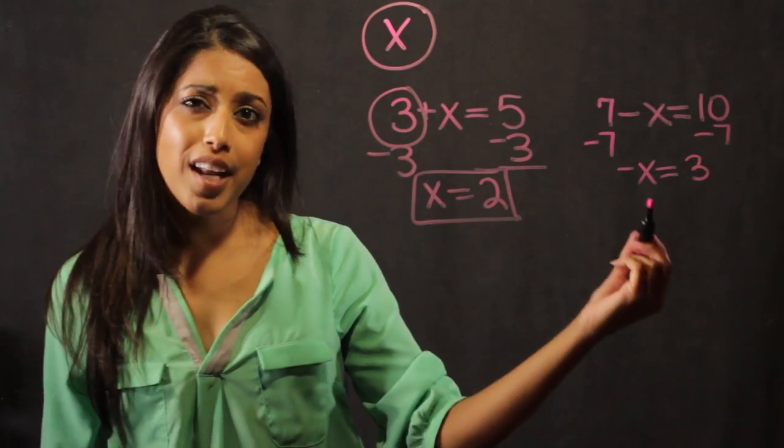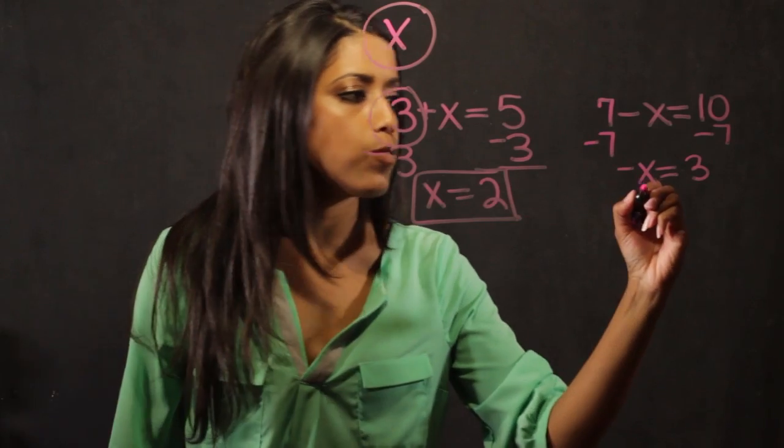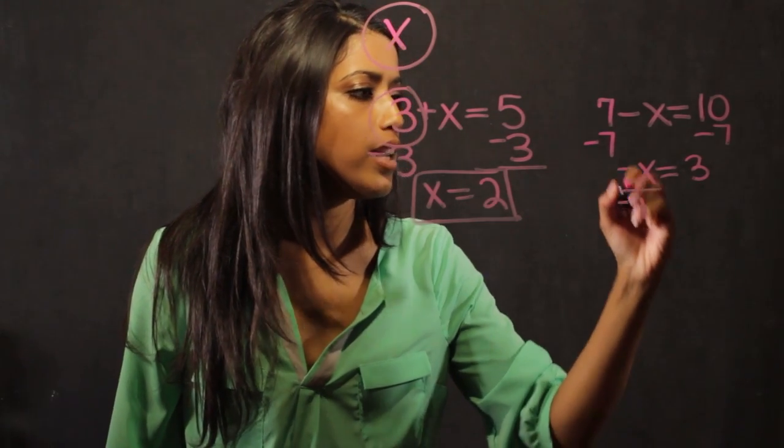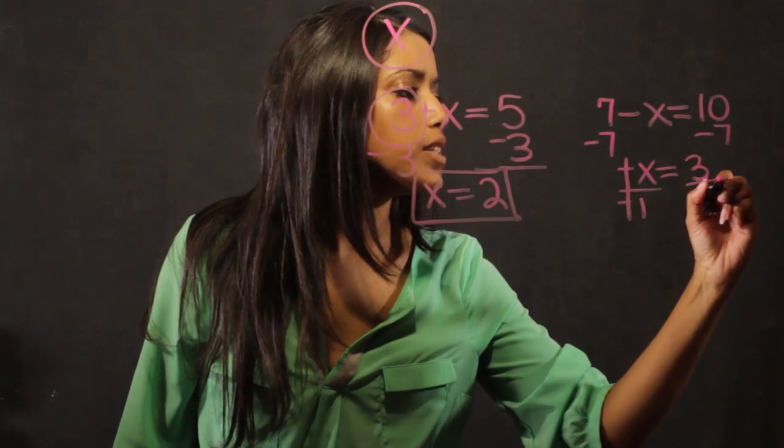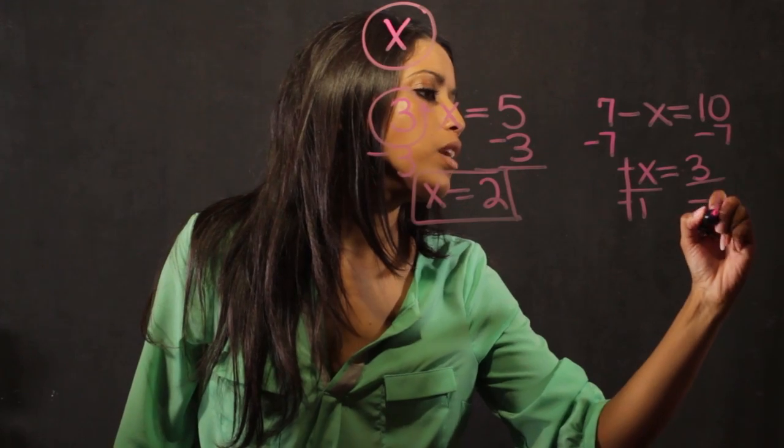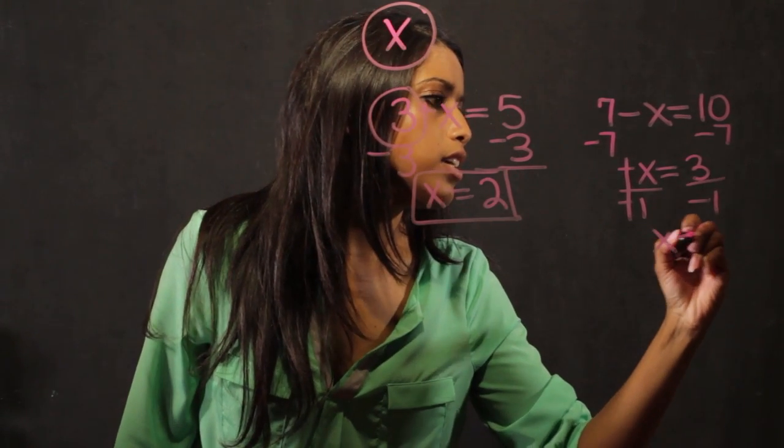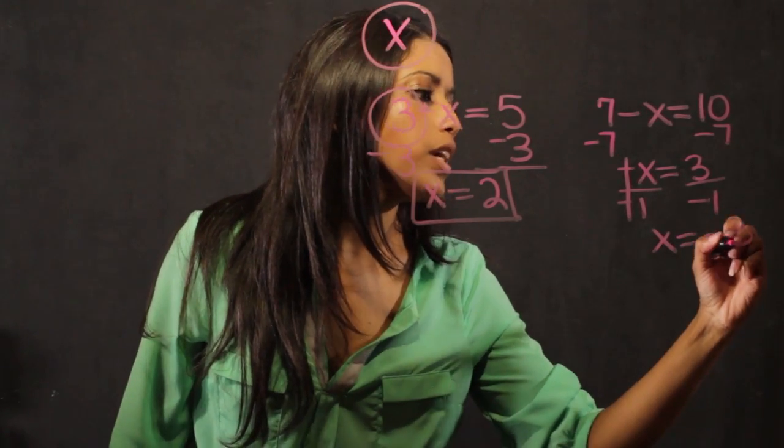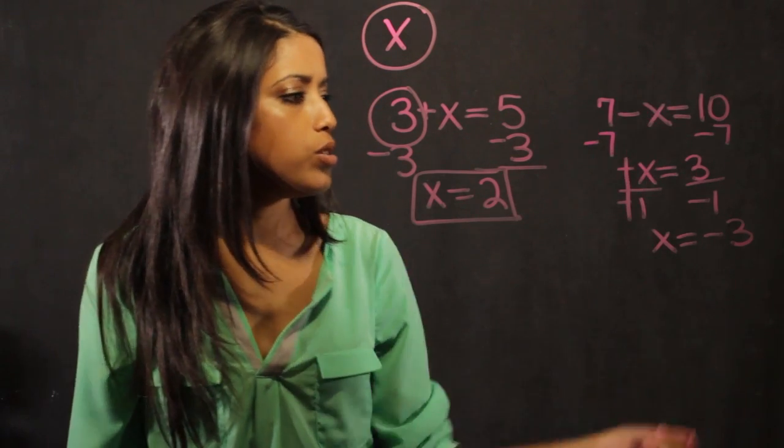I still have a negative sign on my x, so I actually have to divide by a negative 1 to get rid of that symbol, and I divide this number by a negative 1 to get rid of it, and I get x equals minus 3, which is another two-step equation.